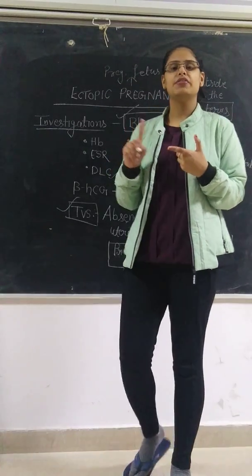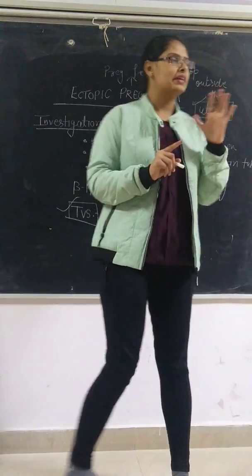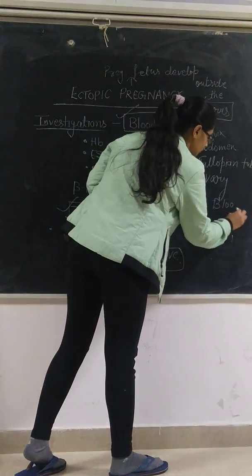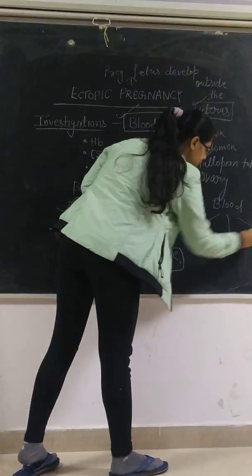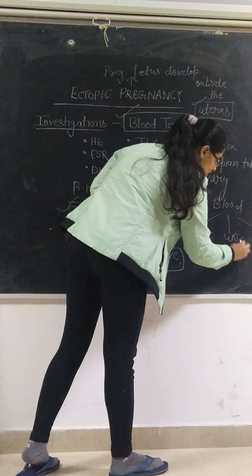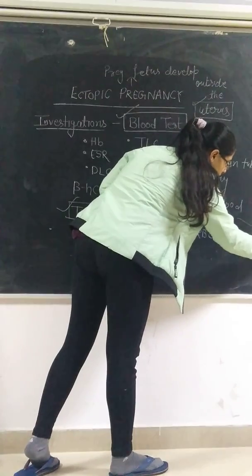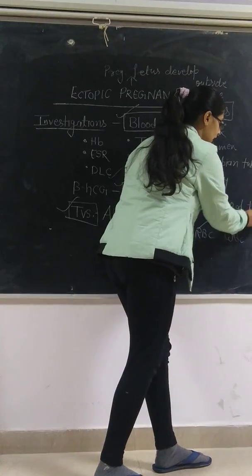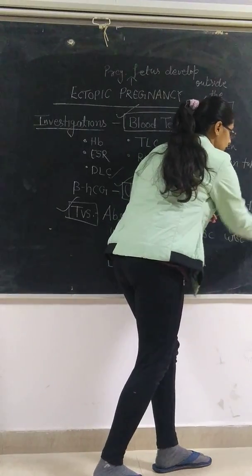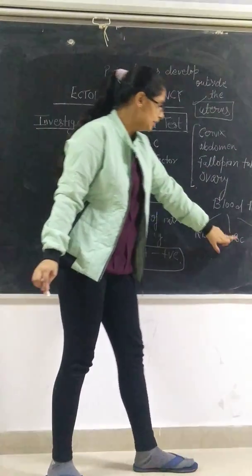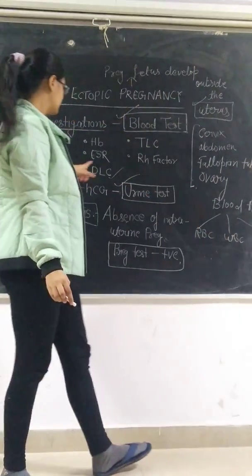DLC is differential leukocyte count. Basically, blood has three factors: RBC, WBC, and platelets. Now we have to talk about blood, so in blood one thing is plasma, but we have to test these three factors. We have to test WBC in the DLC.